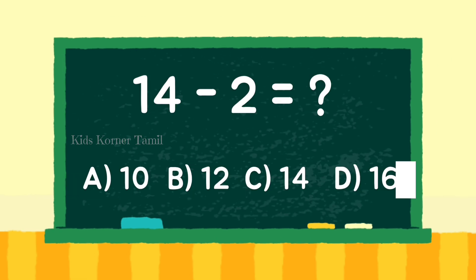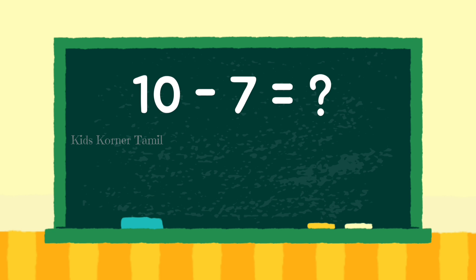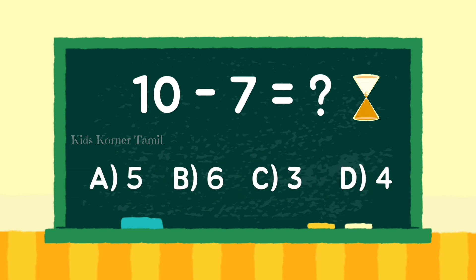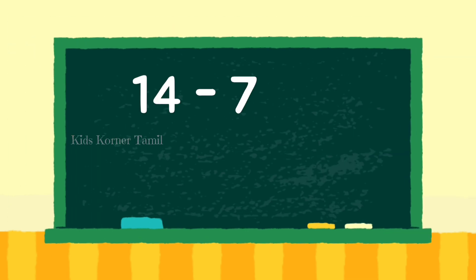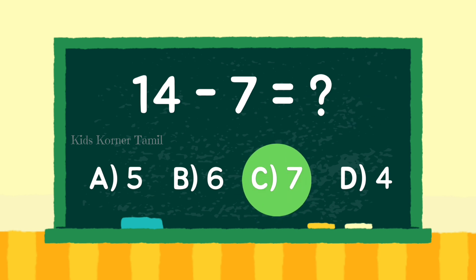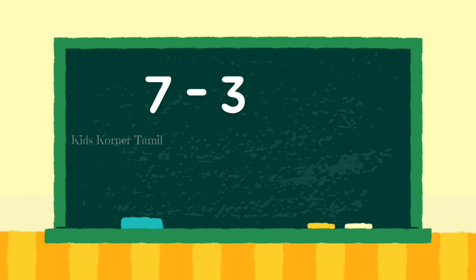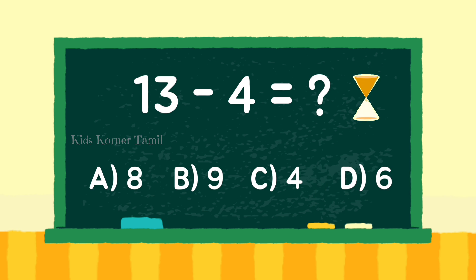14 minus 2 equal to 12. 10 minus 7 equal to 3. 14 minus 7 equal to 7. 7 minus 3 equal to 4. 13 minus 4 equal to 9.